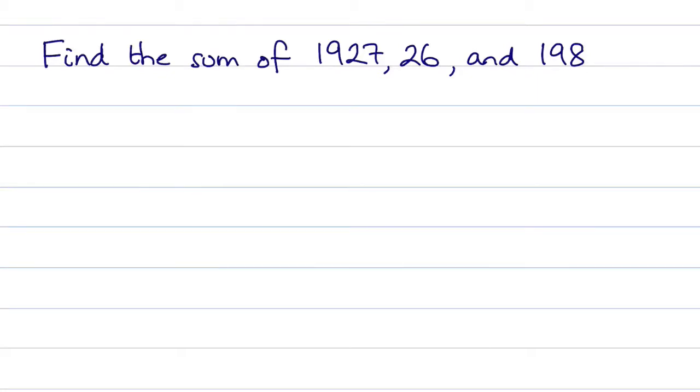In this question we're asked to find the sum of 1927, 26 and 198.